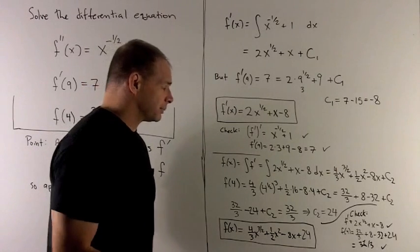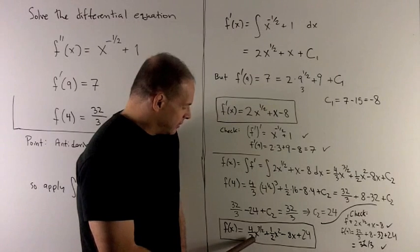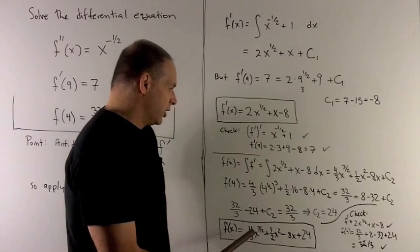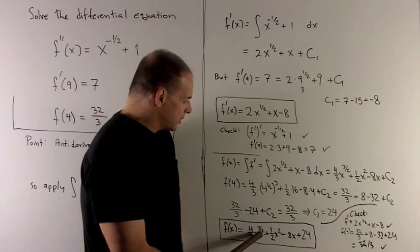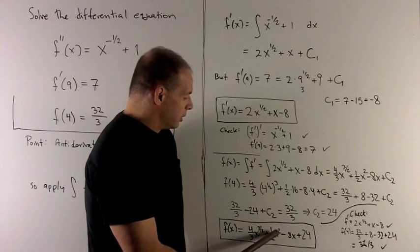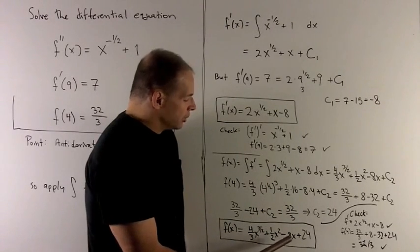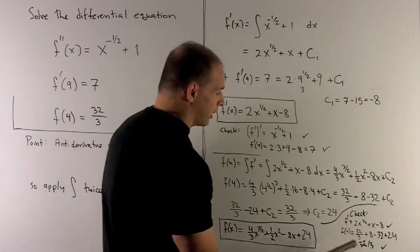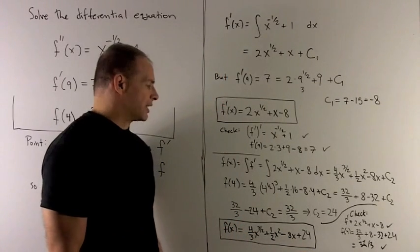Of course, we want to check this. So if I take the derivative of this, I bring the 3 halves down. That gives me 4 times 3 over 2 times 3, which is just going to give me 2. So that's 2 times x to the 1 half plus 2 comes down. We drop an exponent. 2 cancels that out. So we have just x to the 1 power, which is just x. Derivative of 8x is just 8. Derivative of 24 is 0. And we notice what comes out is the derivative that we were promised, 2x to the 1 half plus x minus 8.